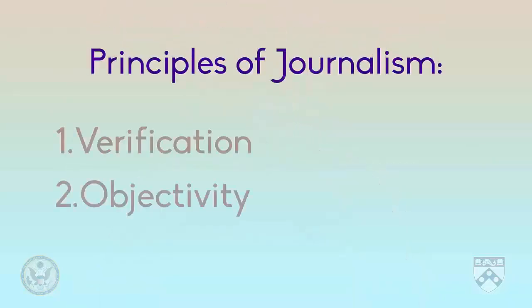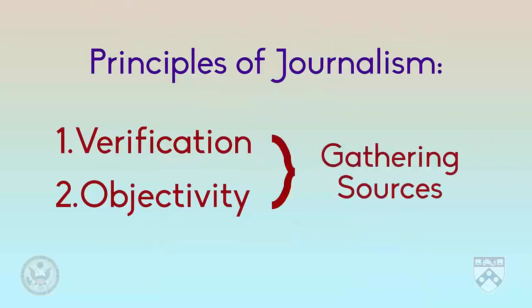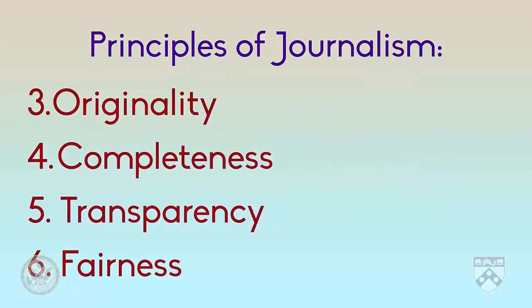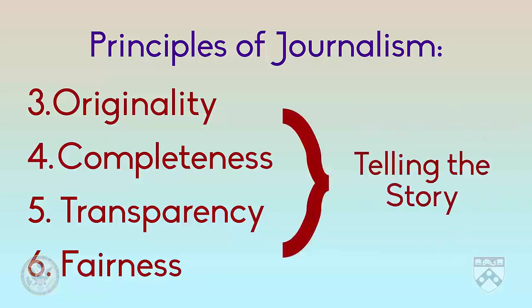We'll cover these principles over the next three videos. The first two principles — verification and objectivity — are important for journalists to remember when they are finding their sources or information. The next four principles — originality, completeness, transparency, and fairness — are the principles that a journalist needs to remember when they are telling the story, meaning when they are actually writing their article.